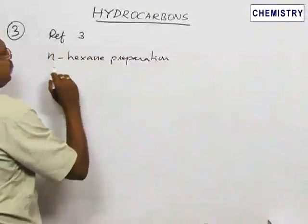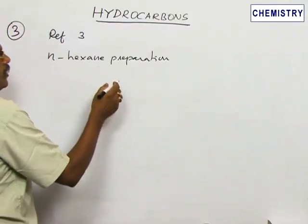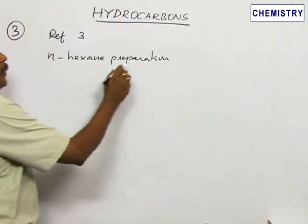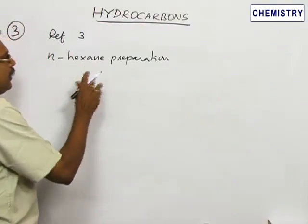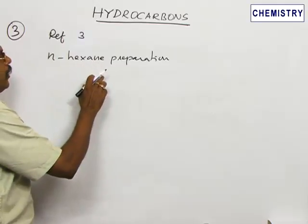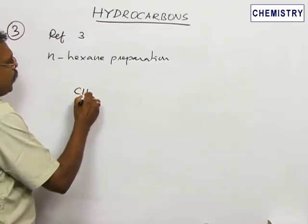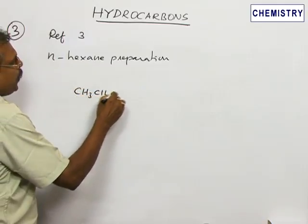Number 3, reference 3 here: N-hexane preparation. The first 3 options are given and N-hexane is better prepared from... all the 3 options will give the product N-hexane, but option 1, that is 1-bromopropane, is the better choice.